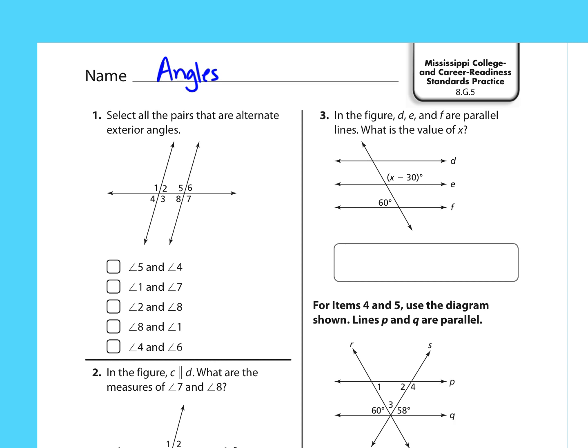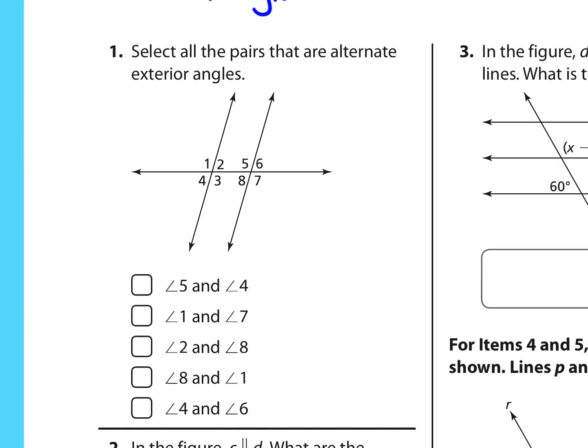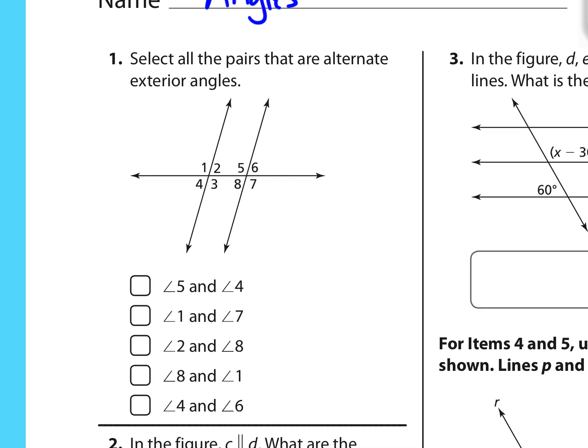So starting with G5, angles, number one says to select all the pairs that are alternate exterior angles. When we see the word alternate, that means they're on opposite sides of this transversal line. And then exterior means they are outside these two parallel lines. So an example of alternate exterior angles would be angle one and angle seven. They're on opposite sides of the transversal and they're outside the parallel lines. Another example would be angles four and six. And these are both pairs of alternate exterior angles.